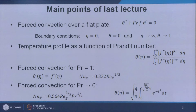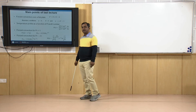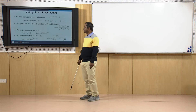For forced convection at low Prandtl number, where Pr → 0, we showed that Nusselt number × Re_x^(−1/2) is proportional to Pr^(1/2), giving 0.564 × Pr^(1/2). The temperature profile in that case is θ(η) = √(4/π) × ∫₀^√(Pr/2 · η) e^(−t²) dt, as derived in the last lecture for low Prandtl number cases.